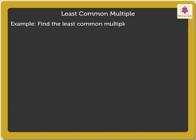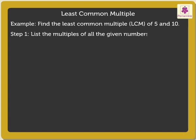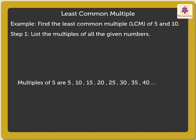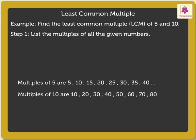Find the least common multiple of 5 and 10. We will follow a three-step process. Step 1: List the multiples of all the given numbers. The multiples of 5 are 5, 10, 15, 20, 25, 30, 35, 40 and so on. The multiples of 10 are 10, 20, 30, 40, 50, 60, 70, 80 and so on.